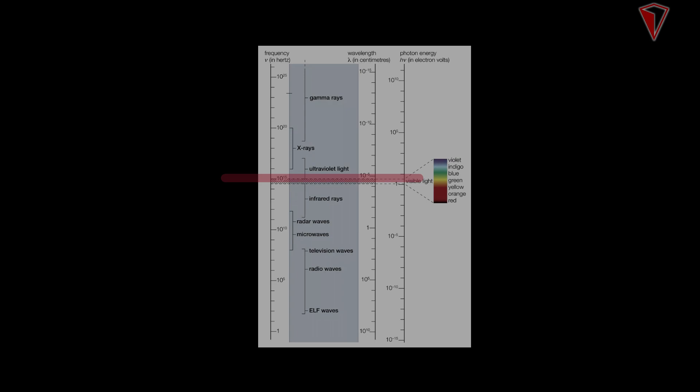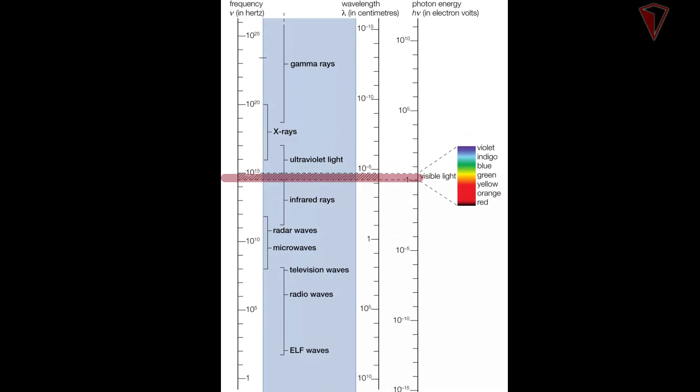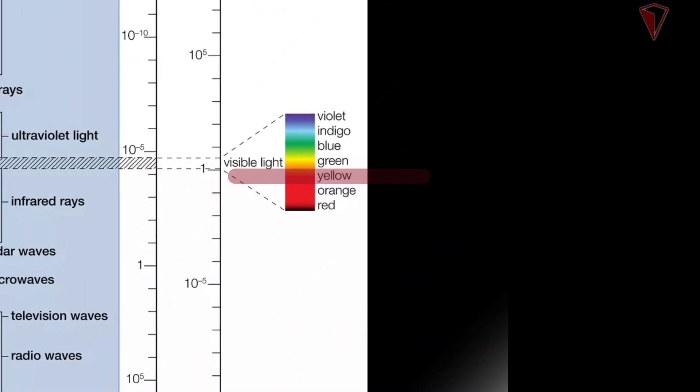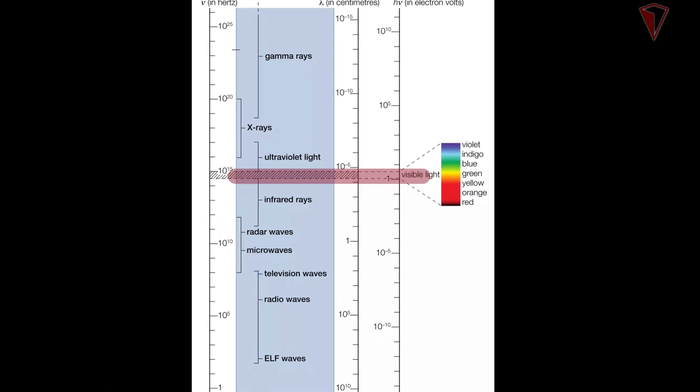Now we will try to understand how this camera filter works and why our eyes cannot capture the same — it is all about wavelength. Normal human eyes can only capture the wavelength of visible light, ranging from approximately 400 nanometers to 700 nanometers. But when we talk about a normal mobile camera, it can capture wavelengths from 300 nanometers to 1000 nanometers, allowing it to see something more than the human eye.